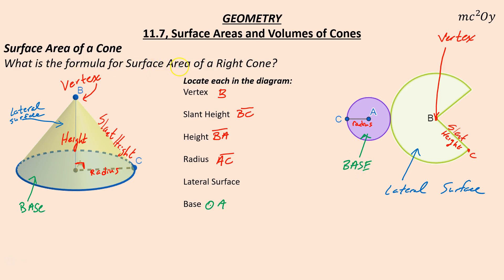Now, the actual formula. The surface area means, like if you were putting a label on it or painting the outside of it, it's how much area you would paint. So the surface area of a right cone is equal to the area of the base, which is πr², plus the area of the sector, which is πrL. A new variable is L, and L represents our slant height. So if we know the slant height, we know L.